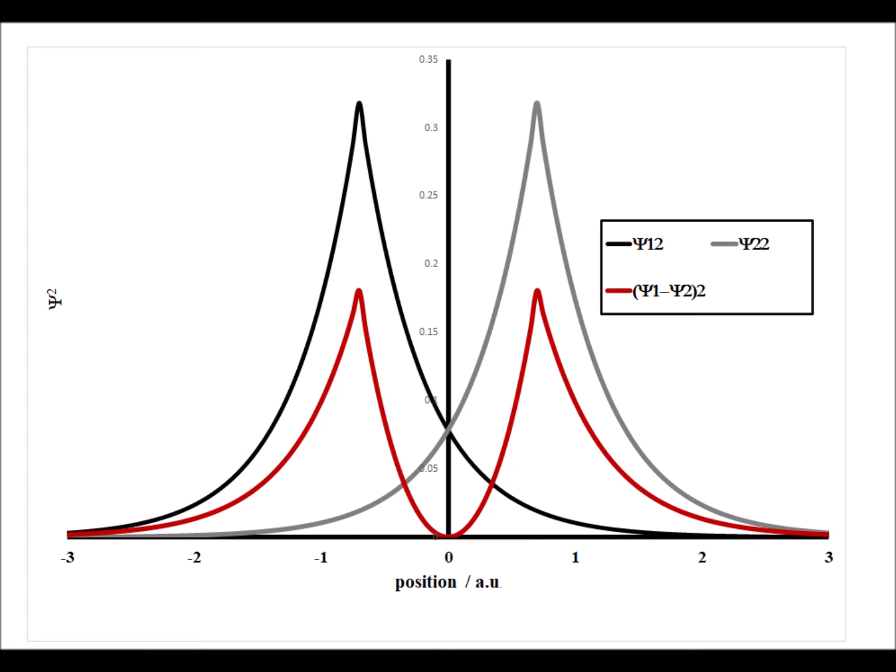Now we again have the probability densities for the hydrogen 1s atomic orbital, but we have the probability density for the antibonding combination shown in red. We see a very big drop in the electron density between nuclei. Therefore, this is going to destabilize the molecular system.